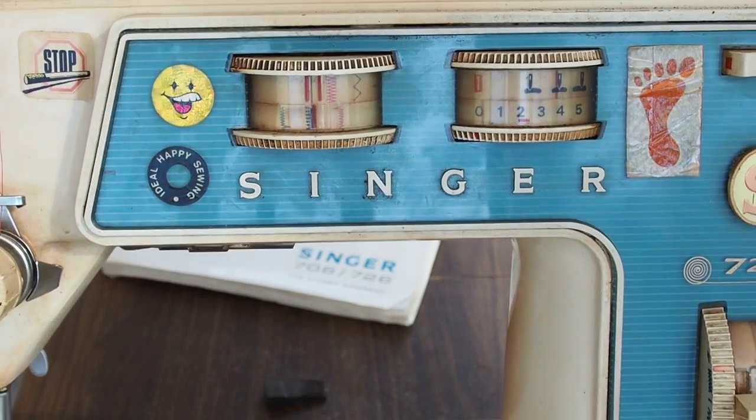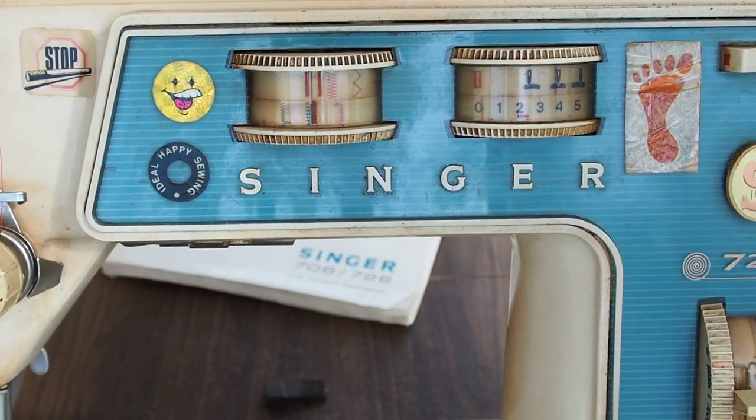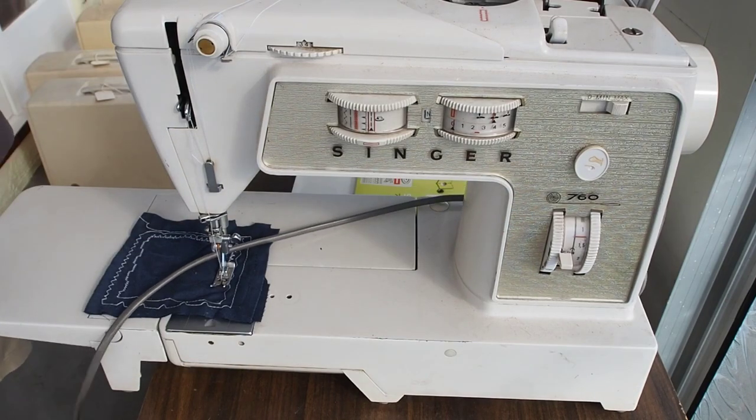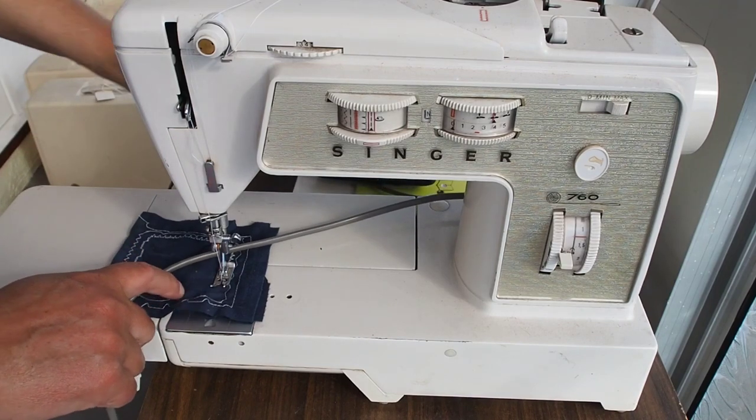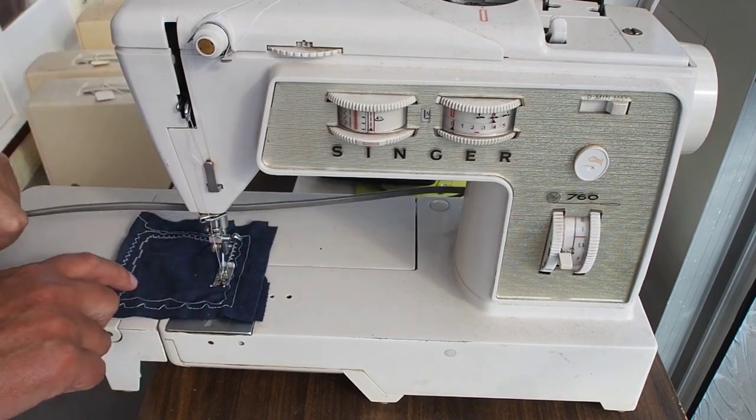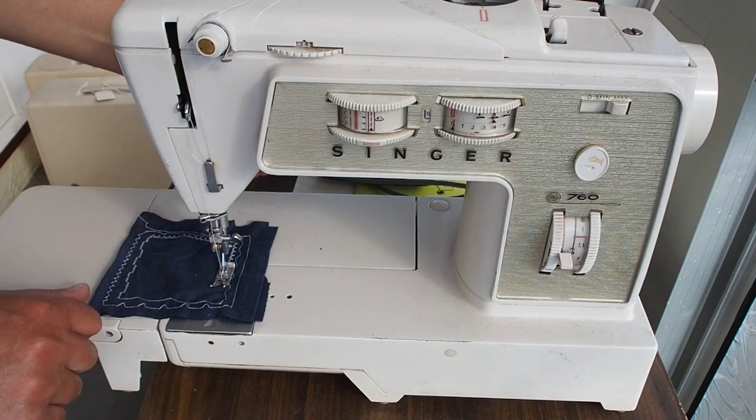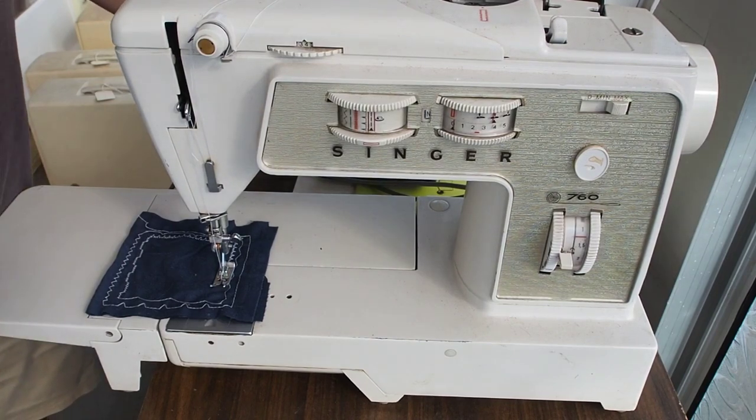I can actually smell the cigarette wafting off this. This is the 760 - I haven't assessed this machine either. Well, I may have actually at some stage. It looks like it sews - that looks like a piece of material I would have sewn on there. It looks like it's sewing from what I can see.